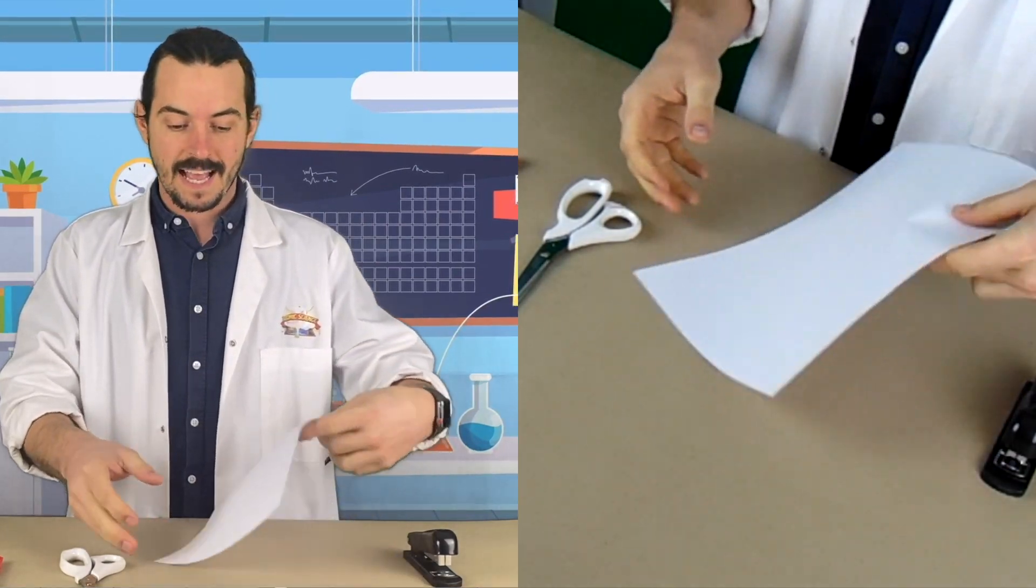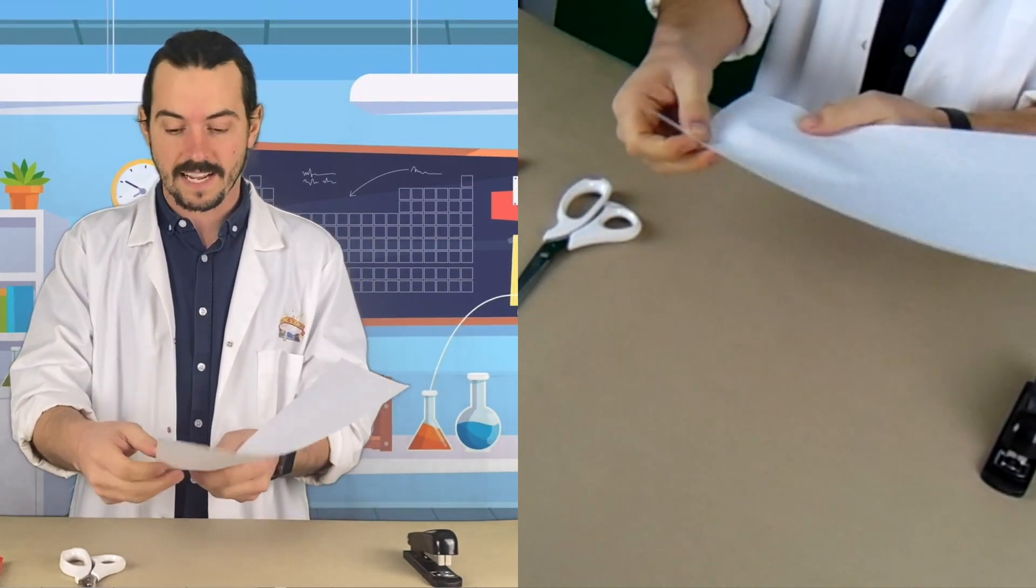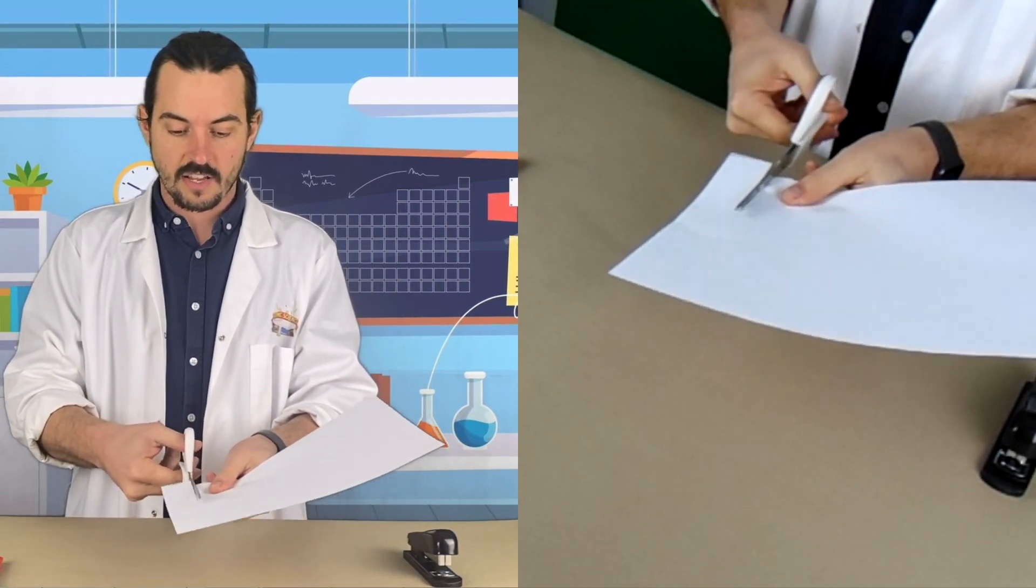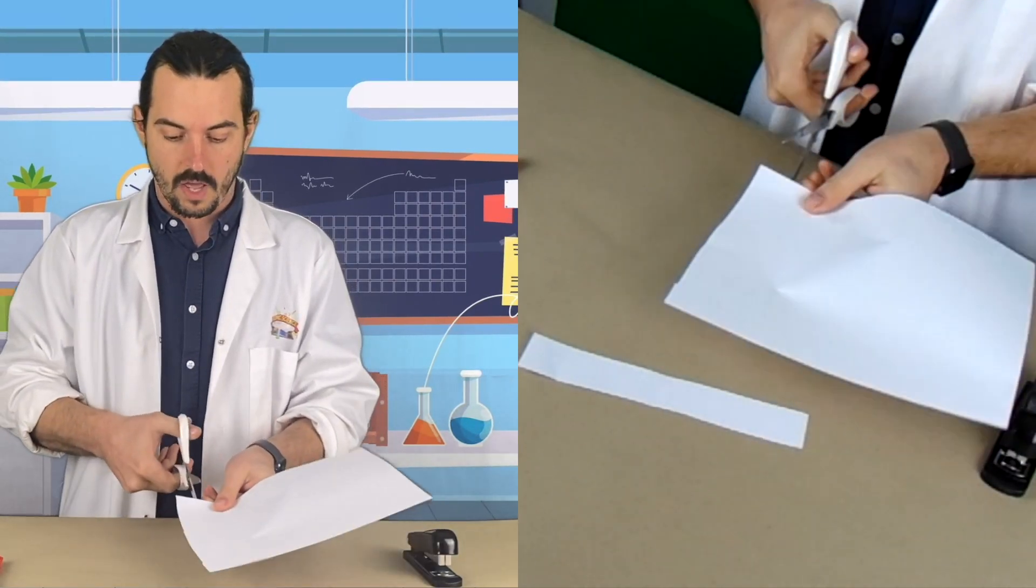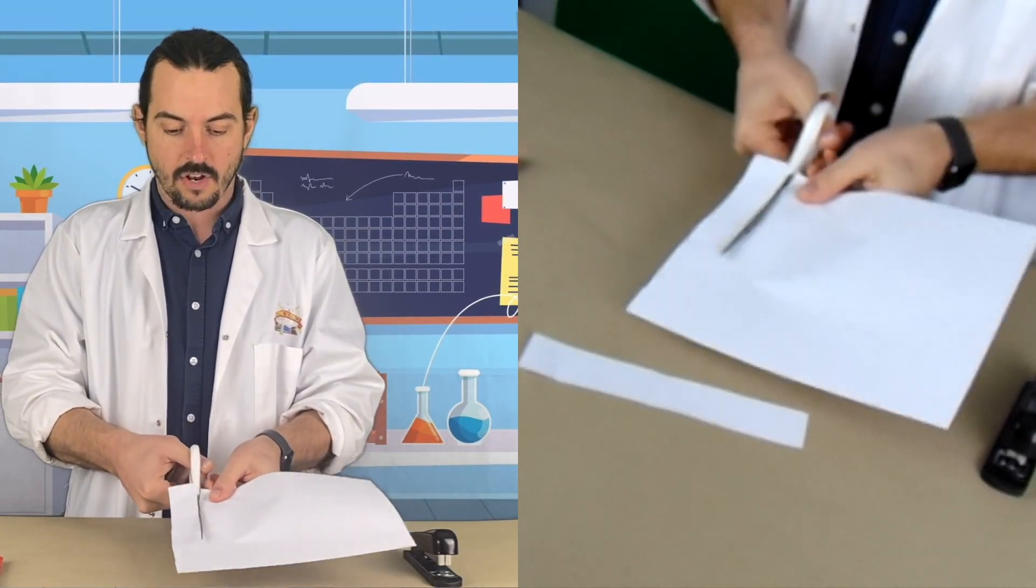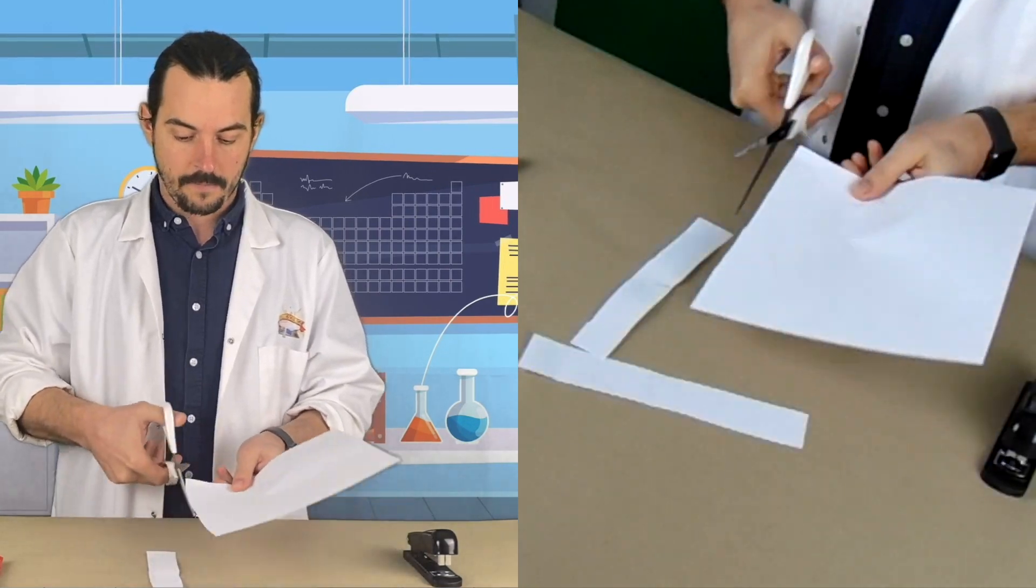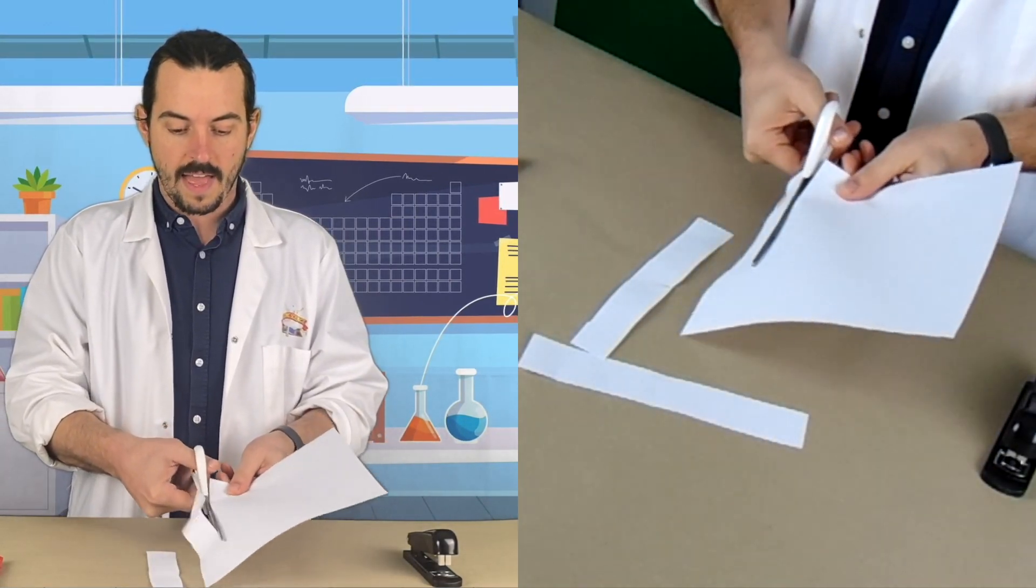Now we need to make our individual links and the way to do this is just to cut strips on our bits of paper. So there's one like that, and another one there, and another one there.